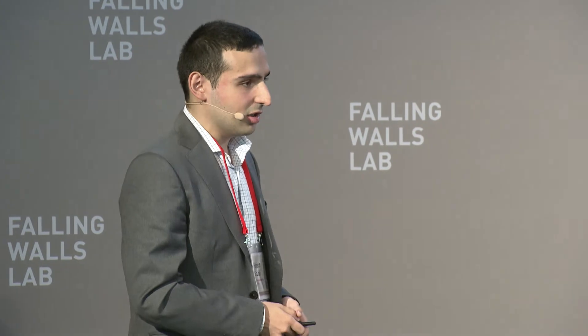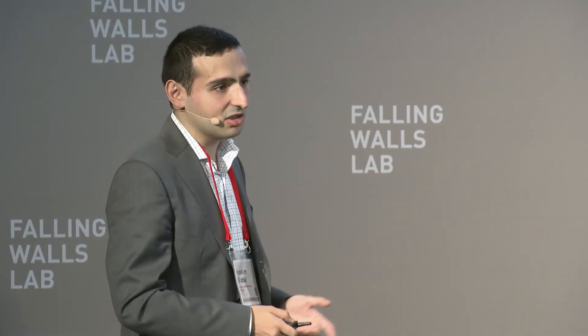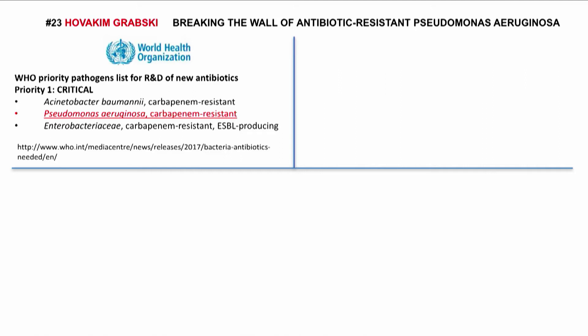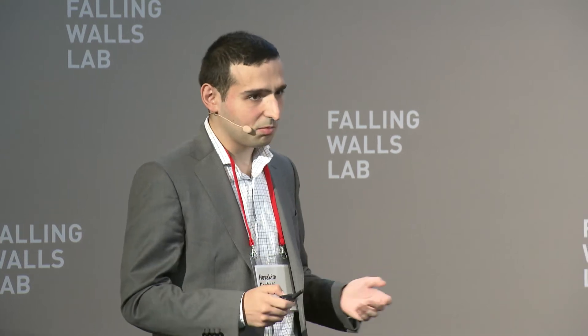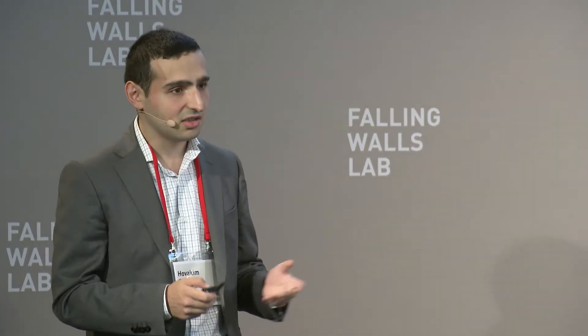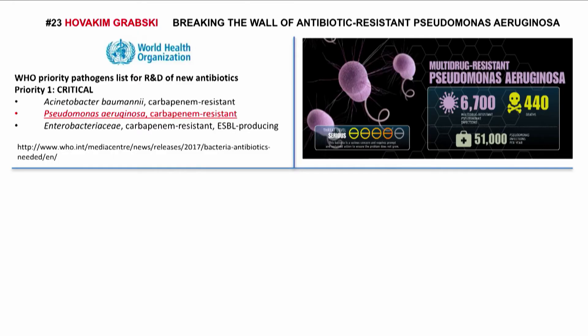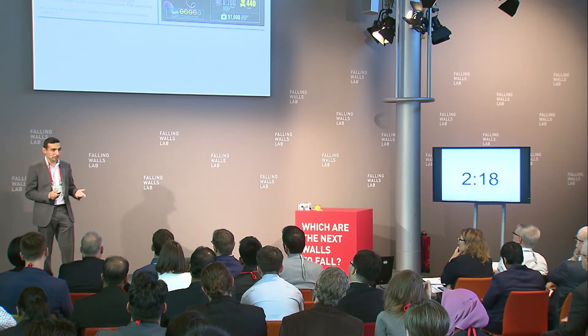In 2017, the World Health Organization announced a list of the most dangerous superbugs, and among them is Pseudomonas aeruginosa, which is an antibiotic-resistant, opportunistic human pathogen. The central problem is that it affects patients suffering from AIDS, cancer, cystic fibrosis, burn victims, people with implants, prosthetics, etc. It should also be noted, though it is hard to believe, that the hospital is the place where a lot of people can get infected by this bacteria.